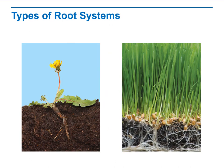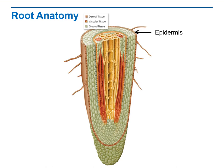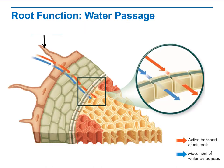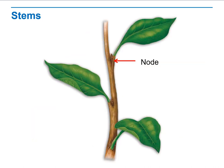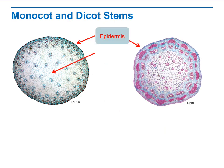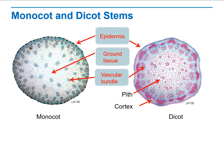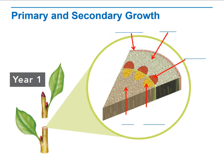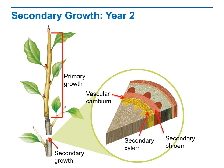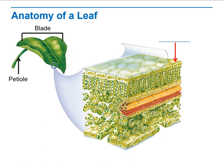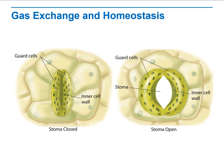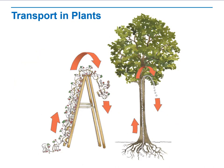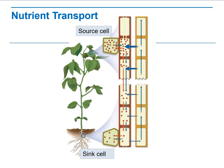In this week, we will talk about the types of roots in detail and the anatomical structure of the roots, then the function for each part. Then we will go to the stem — the anatomical structure of the stem and its two parts — and what the primary and secondary growth for the stem are. Then we will go to the leaves, the anatomical structure of the leaves, how gas exchange and homeostasis happen inside the leaves, and the transport of water and minerals in plants using capillary structure and how nutrients are transported.